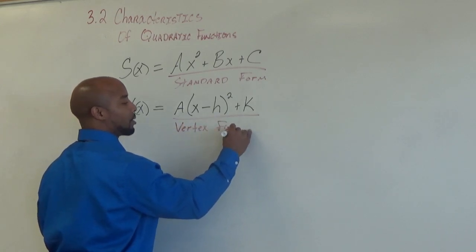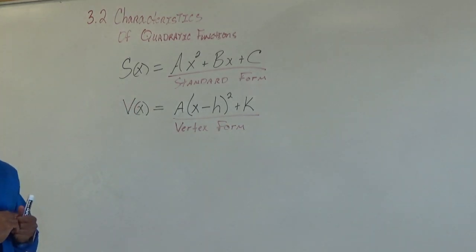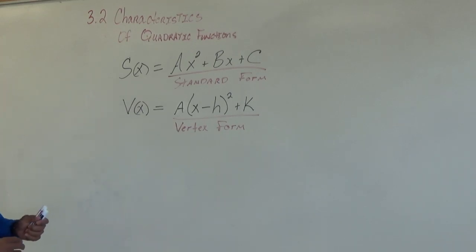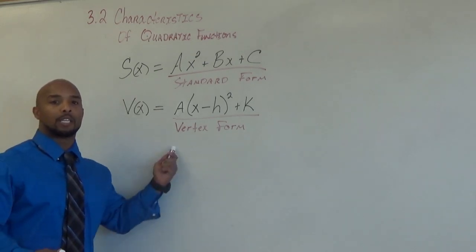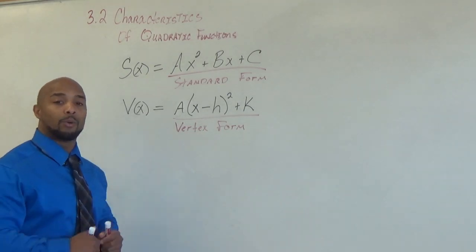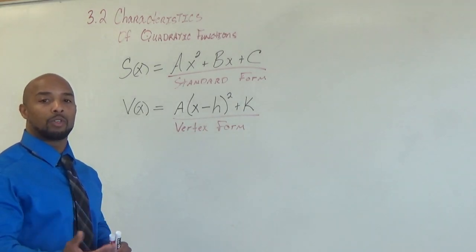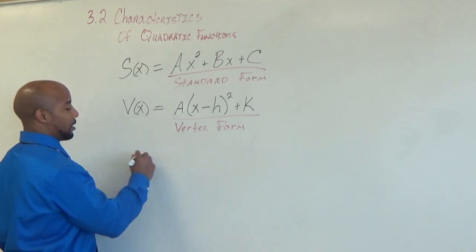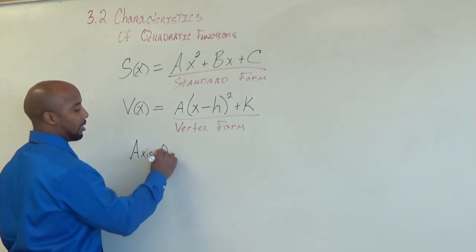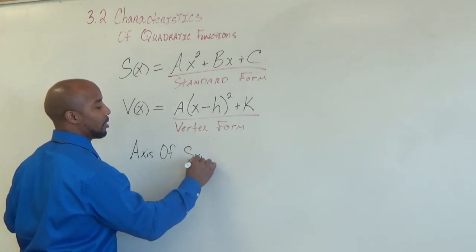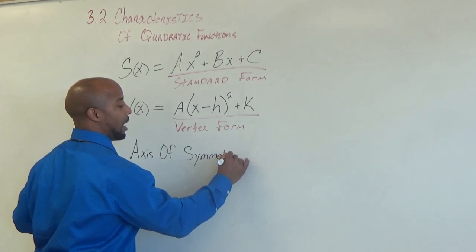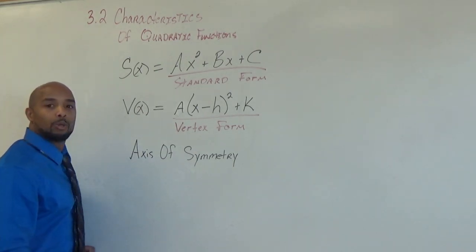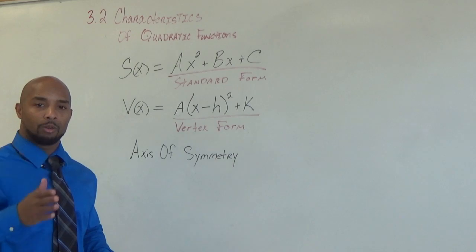Feel free to pause this video and jot this information down. Now, one thing that I really enjoy about the vertex form for a quadratic function is it's easy to identify what is the axis of symmetry as well as the vertex. An axis of symmetry is simply a line that will divide this quadratic function into two congruent halves. It passes directly through the vertex.